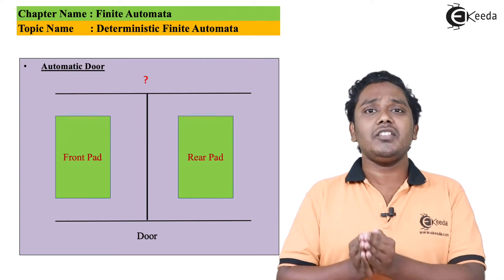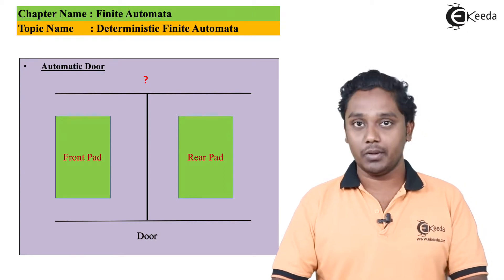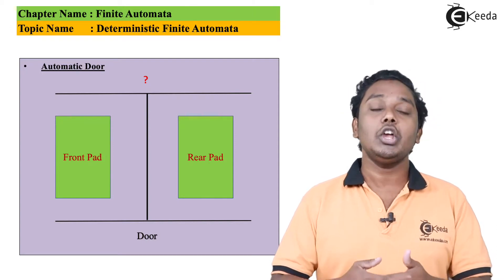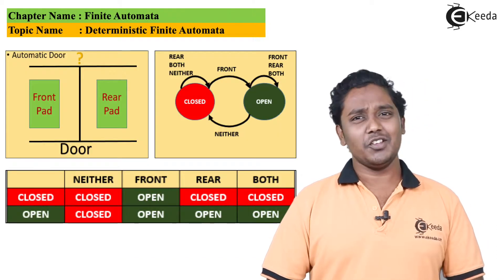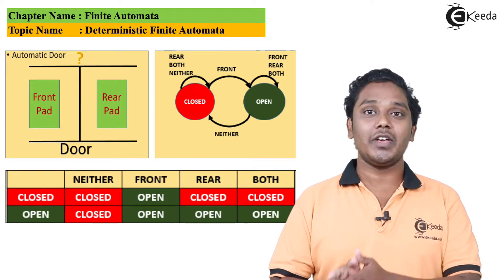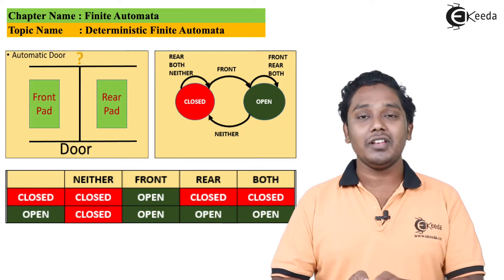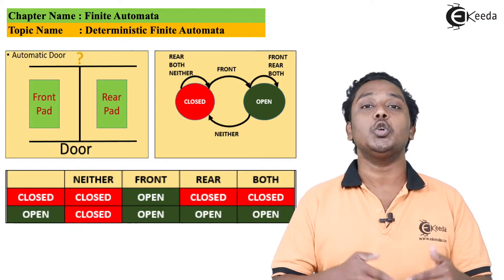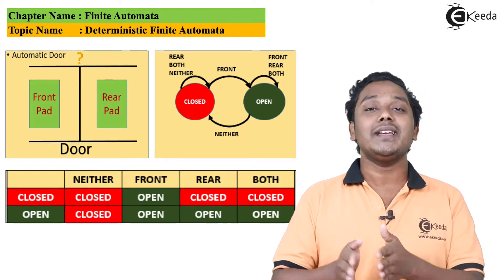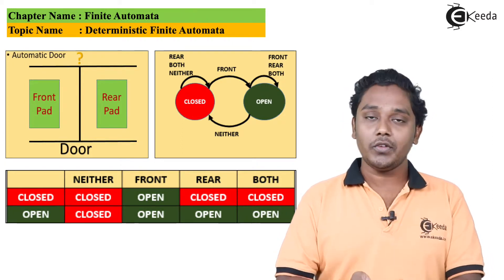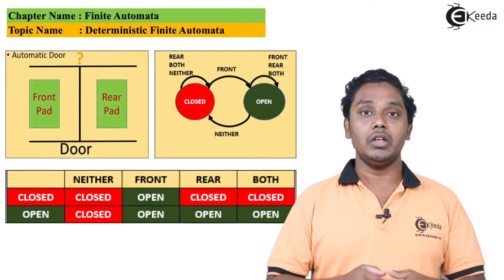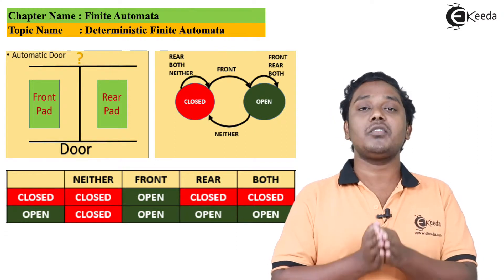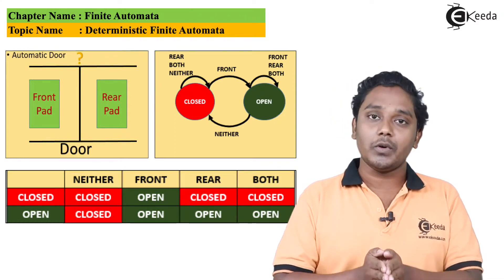States represent what exactly the door remembers — the current condition of input, that is whether people are entering or exiting. Suppose initially the door is closed and a person is entering. When the person is entering, the sensor detects it and gives a direction to the door to open. This is called finite state control. The earlier state was closed and as soon as the person is entering, the door opens. There are various ways to represent a DFA; the first one is called the transition diagram.